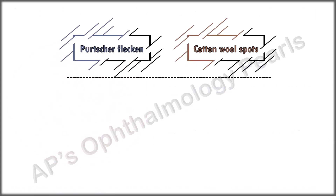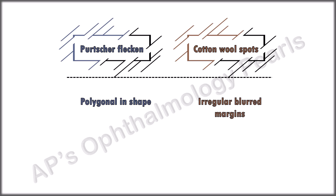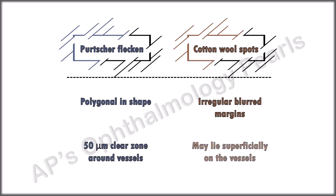Purtscher fleckens can be differentiated from cotton wool spots by their large polygonal shape, in contrast to the irregular blurred margins of cotton wool spots. Also, Purtscher fleckens can have a 50-micron clear zone around vessels, whereas cotton wool spots may even lie superficially on the retinal vessels.